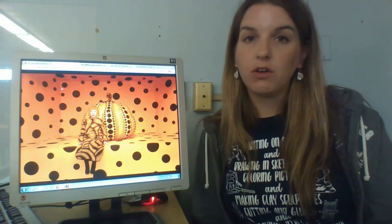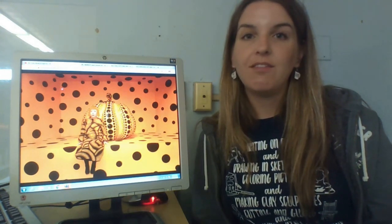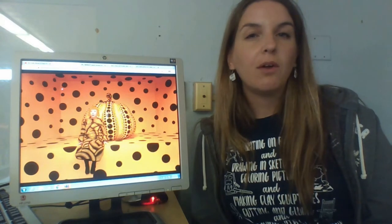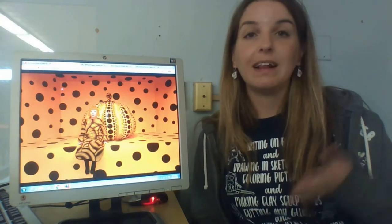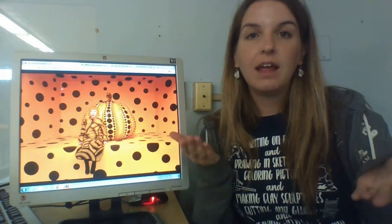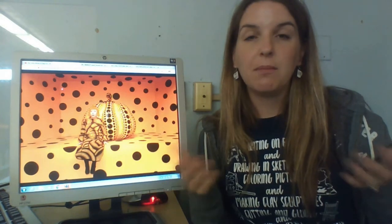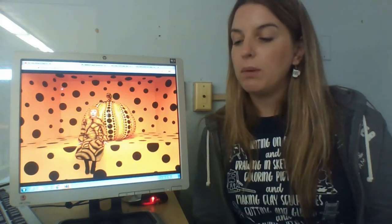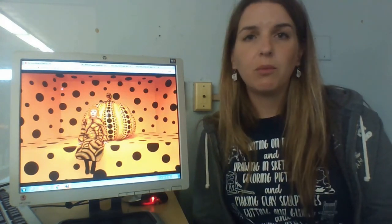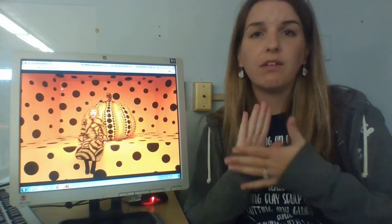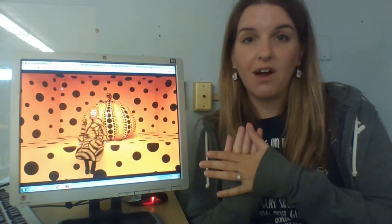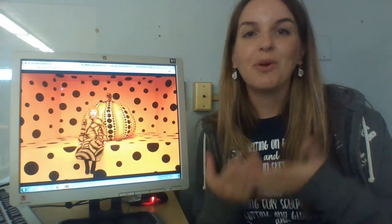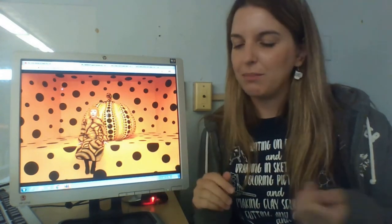Also making sure that we're showing the element of art, which is value. Remember, value is when you are showing lightness and darkness in a piece of artwork to make it look more realistic. If we were to take these pumpkins and just color them one solid color, they would look very flat, just like the piece of paper that they're on. But if you add value, it makes them look a little bit more three-dimensional and makes them pop out a little bit more.